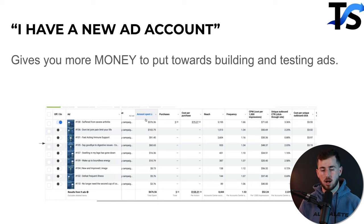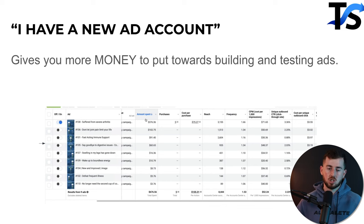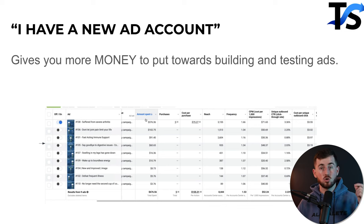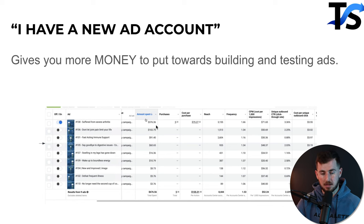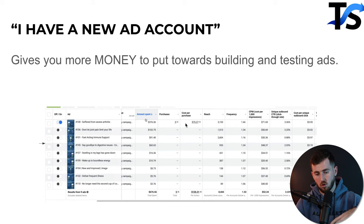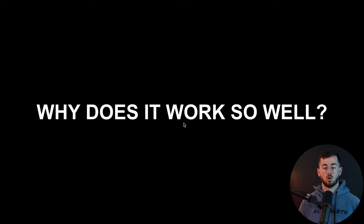Last objection: 'I have a new ad account.' A lot of people ask whether to put their limited budget toward audiences or broad targeting. Always broad targeting — you don't have the money to blow on audiences yet. Spend all your money on testing and building winning ads. Here's a brand new ad account selling a supplement. In our first $600 spent, we found a winning ad at $75 cost per purchase, hitting our target goals.